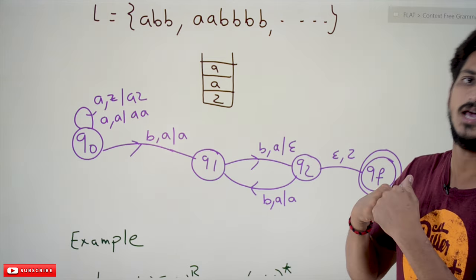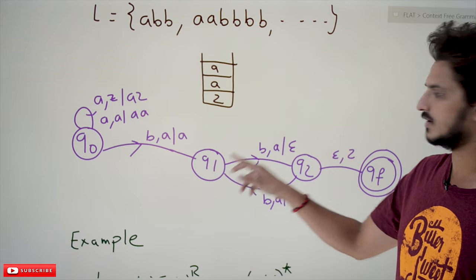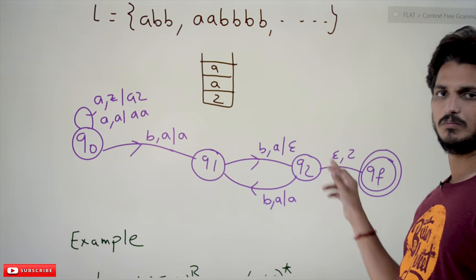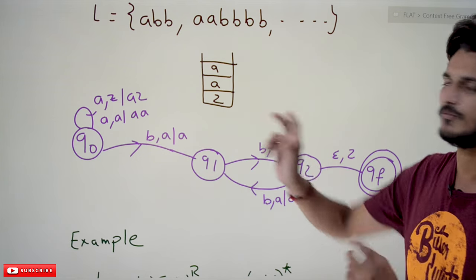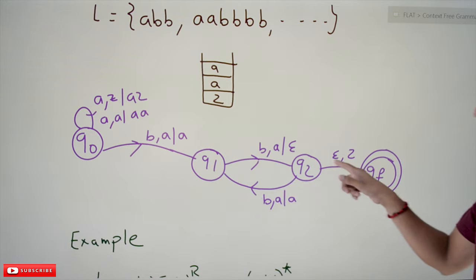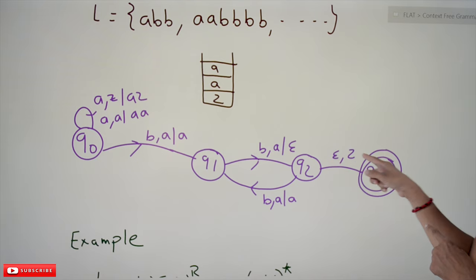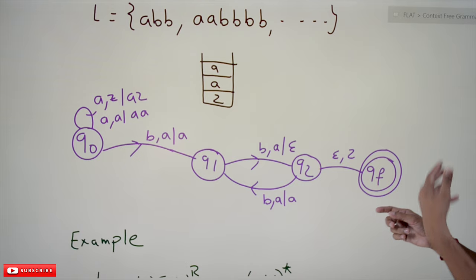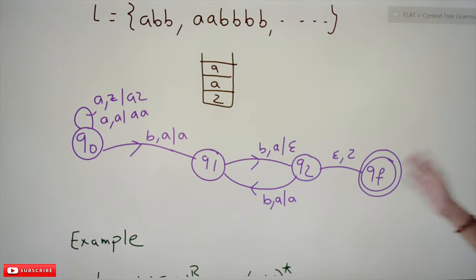On q1, if the input symbol is 'b' and the stack top is 'a', we do a pop operation — that's why we output epsilon. We have now seen two b's, and for the second 'b' we take action and pop one 'a' from the stack. After that, if you see another 'b', move back to q1 and repeat the same logic — for every second 'b', pop one 'a'.